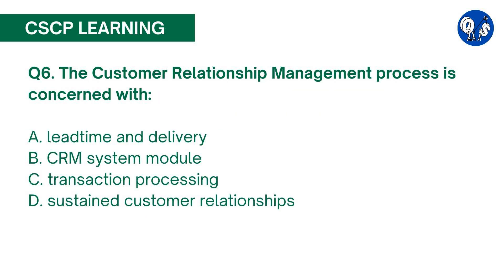Question number 6. The customer relationship management process is concerned with: A. Lead Time and Delivery, B. CRM System Module, C. Transaction Processing, D. Sustained Customer Relationships. The correct answer is D. Customer relationship management is about building sustained relationships with customers. Long-term customers are more profitable and require less ongoing integration to be sustained. Capturing new customers is expensive and time-consuming. For that reason, any company's focus needs to be in building lasting relationships.